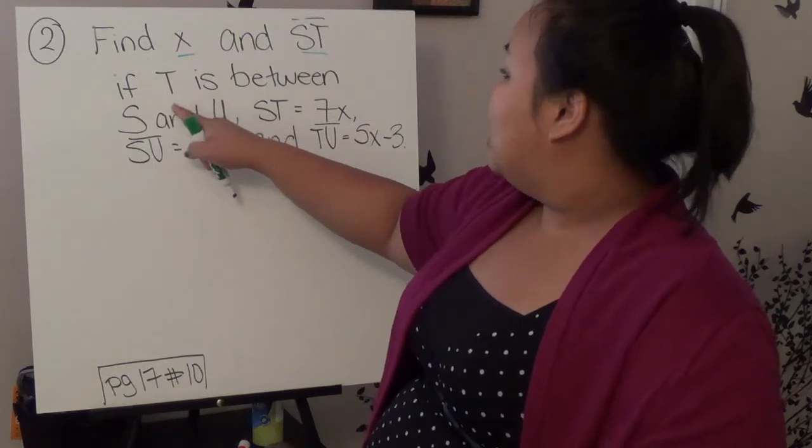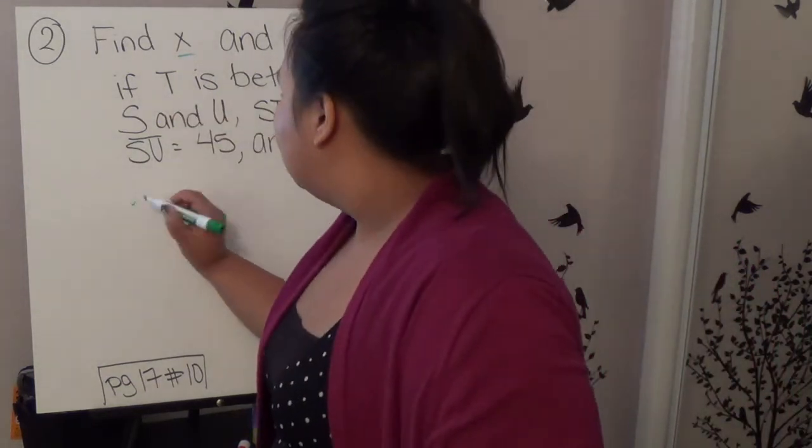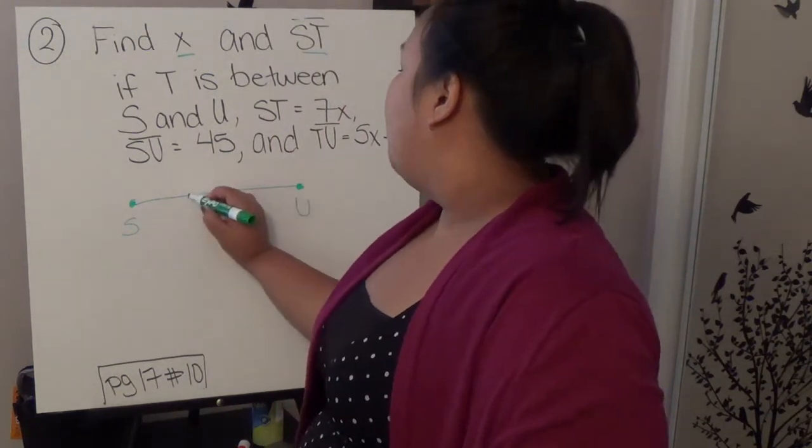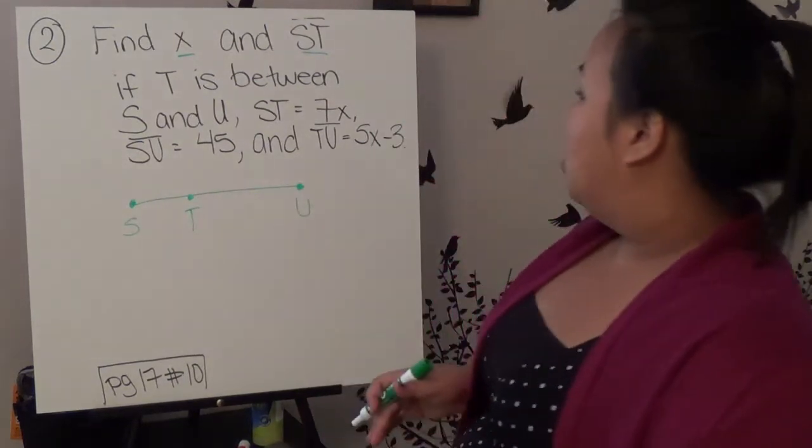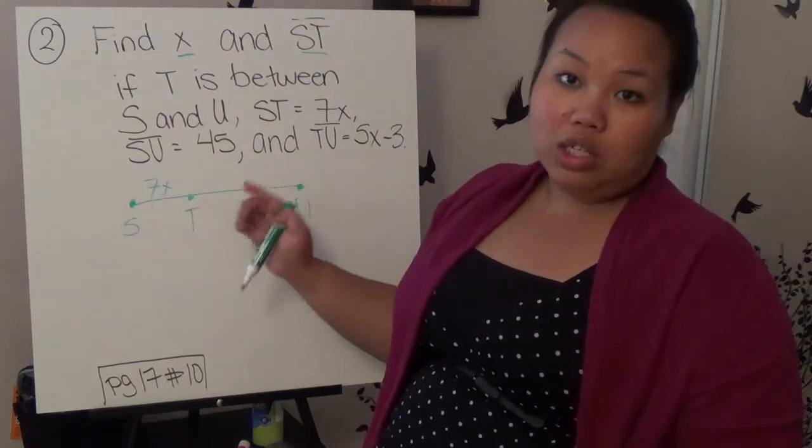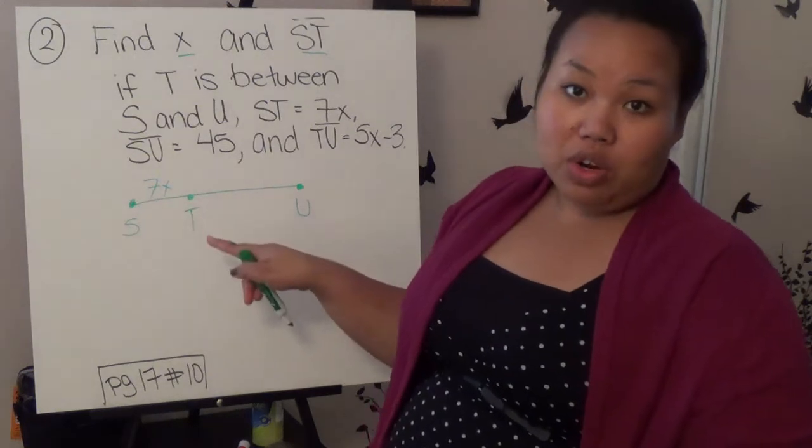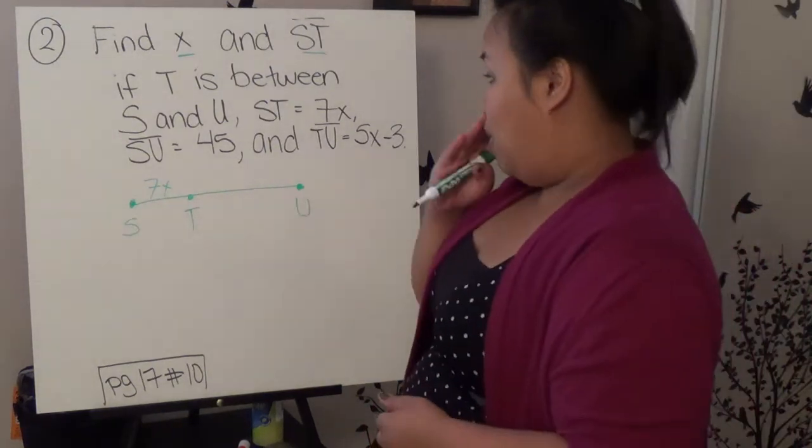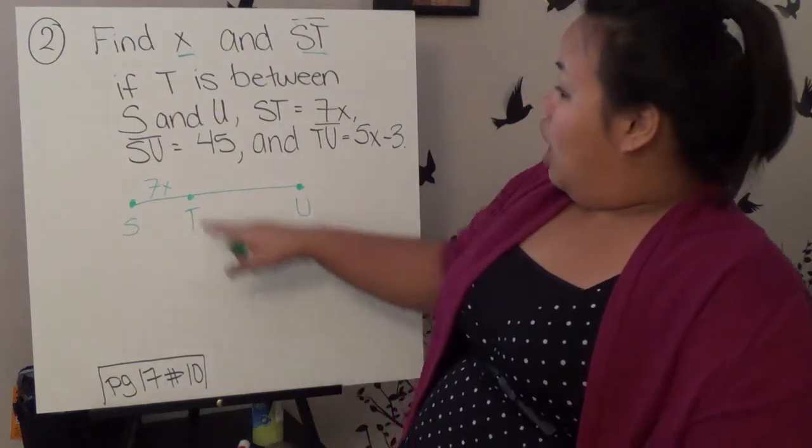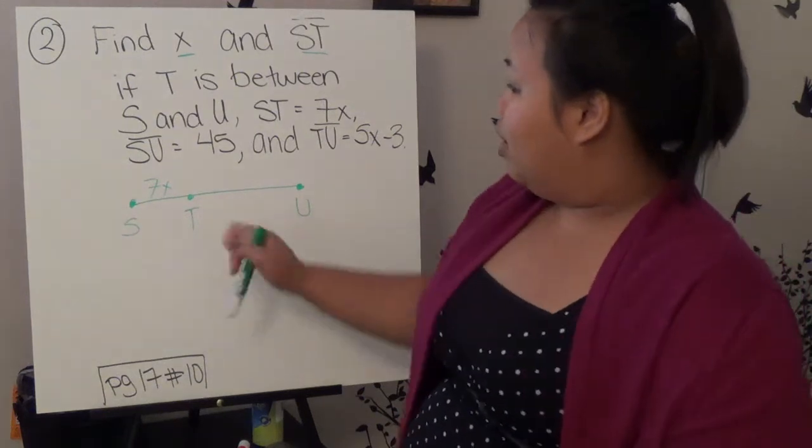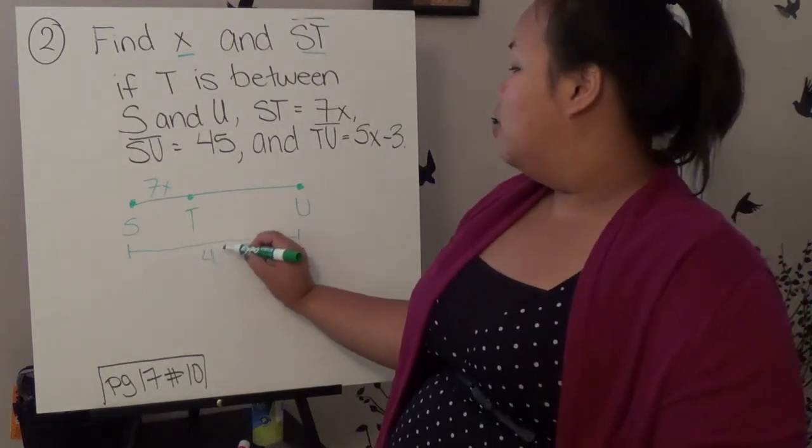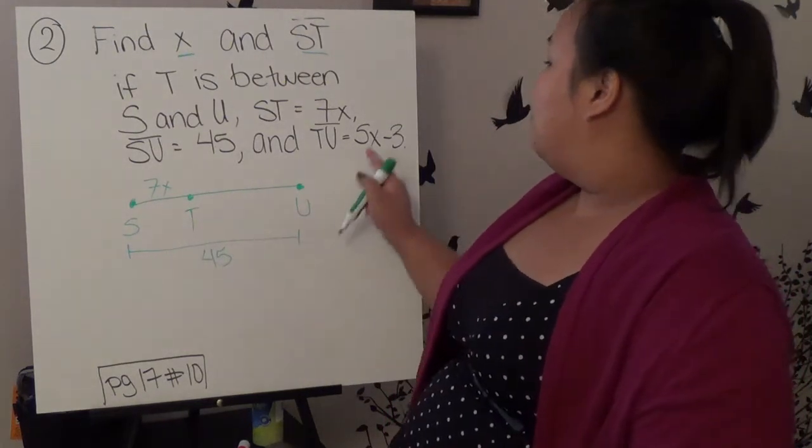So we know that T is between S and U, so there's two points, S and U, and it says that T is somewhere. It doesn't have to be exactly in the middle, it's just T is somewhere there. And it tells me that ST equals 7X. Now we're just guessing where T belongs, so this might end up bigger than the others, number-wise, but we're just going to do the problem like this. So ST equals 7X, so this whole thing is 7X. SU, the whole thing, is going to equal 45, just like the other problem. This is to show me that the whole thing is 45. And then TU is 5X minus 3.